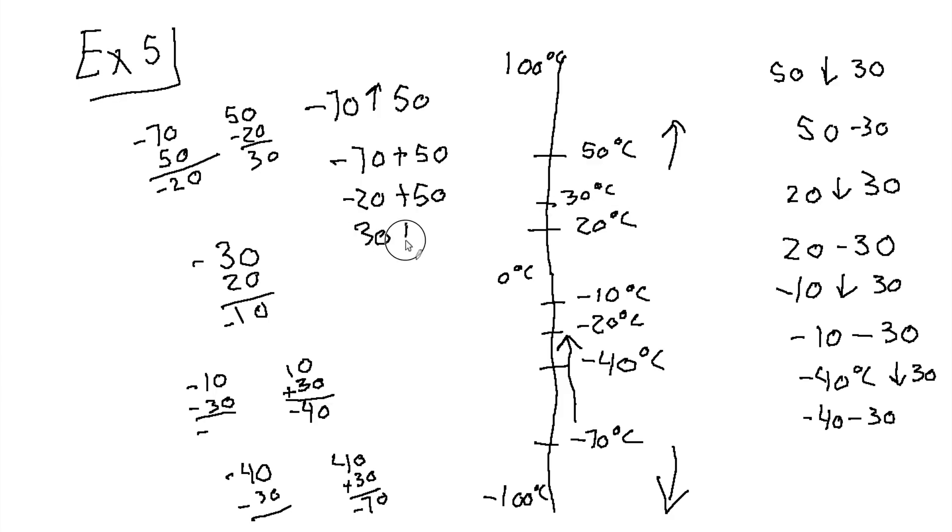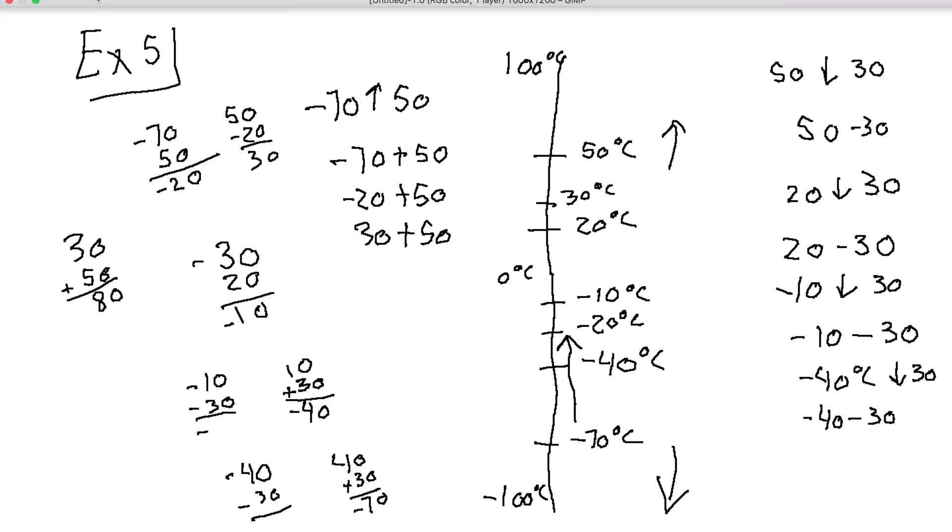Say we're going up another 50. So, 30 plus 50. Regular addition. So, 50 plus 30. You go up to 80 degrees. And that will wrap it up for today. Thank you for watching. Please rate and subscribe. And if you have any other questions, please add a comment down below.